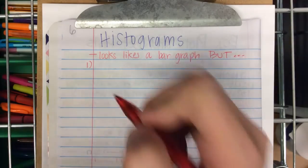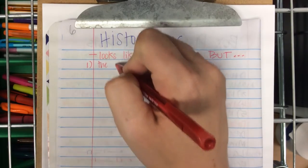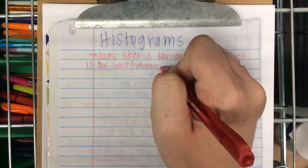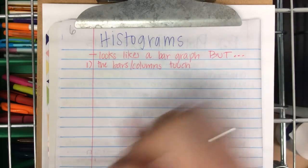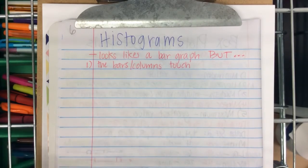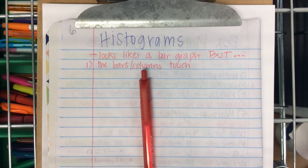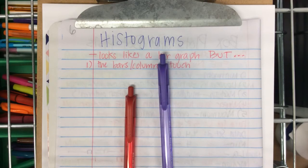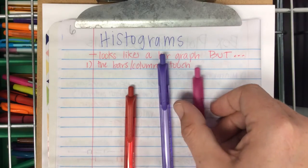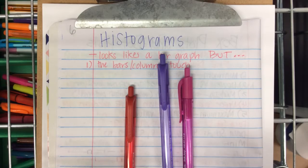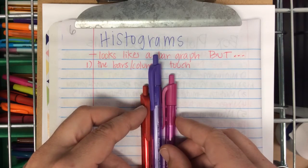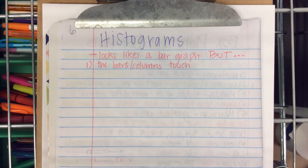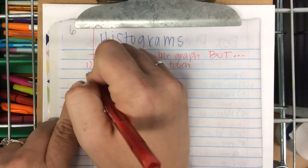The first really big difference is that in a histogram, the bars or columns touch. In a bar graph, like if this pen was my bar, there's space between each measurement. In a histogram, they touch. They're right next to each other. There's no space between. And part of the reason that they touch is the second difference.